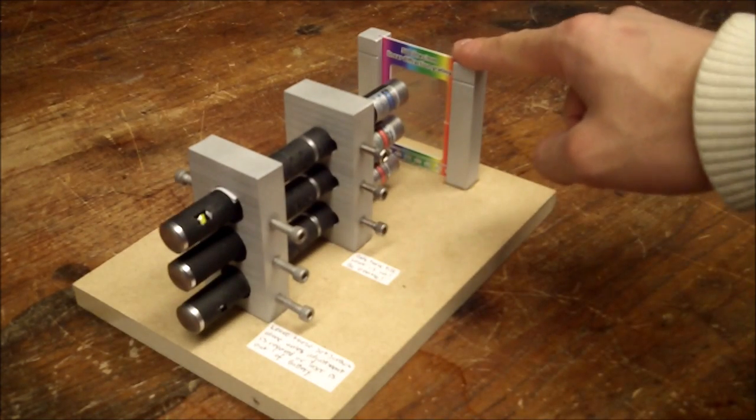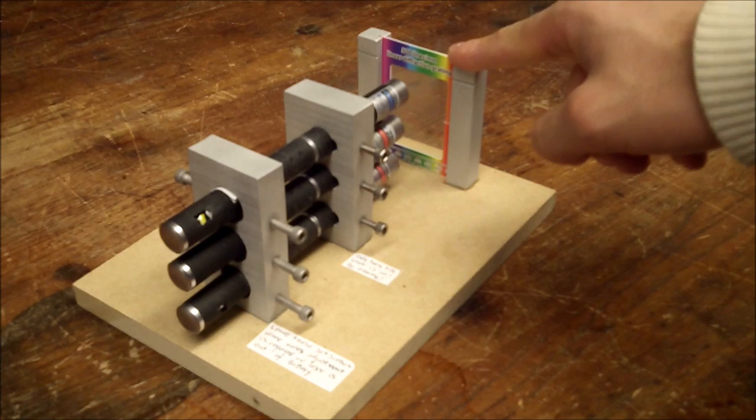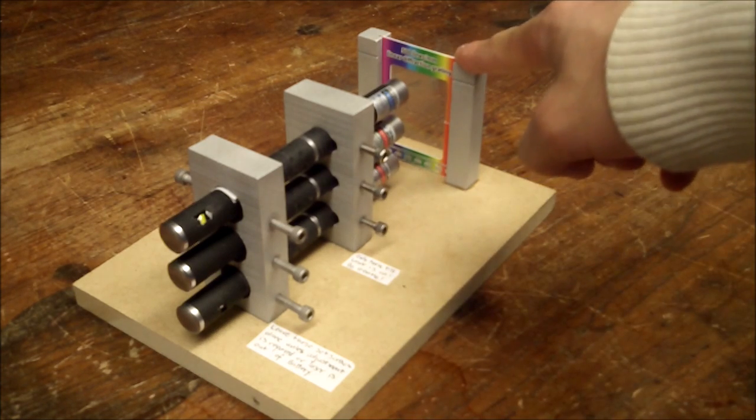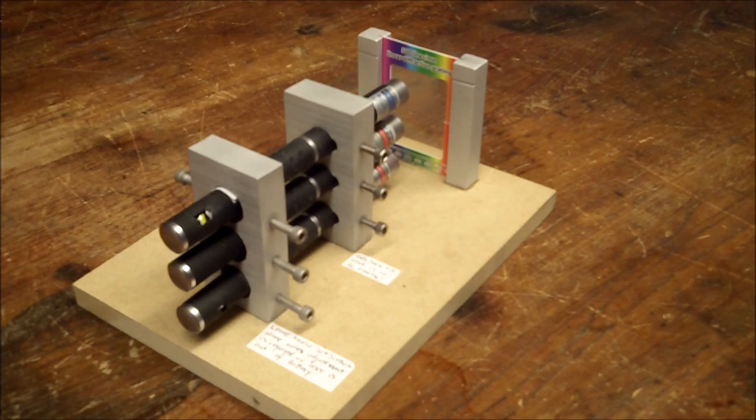This diffraction grating can be swapped out. Right now I have 500 lines per millimeter, which produces a good angle for presentation. More lines per millimeter means greater diffraction angle.